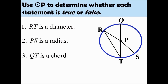Use circle P to determine whether each statement is true or false. Number 1: Line segment RT is a diameter. Line segment RT is a chord; however, that chord does not go through the center of the circle. Therefore, it is not the diameter. So this statement is false.